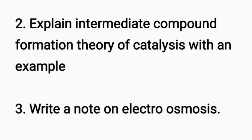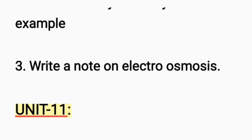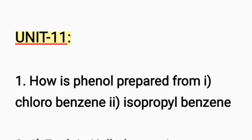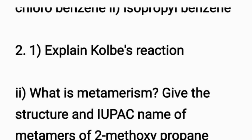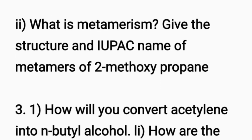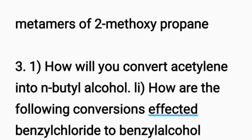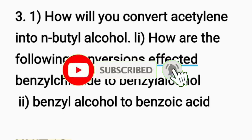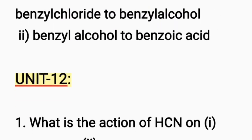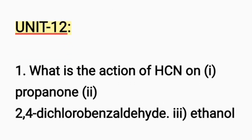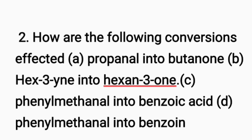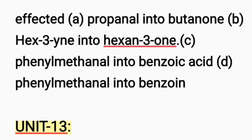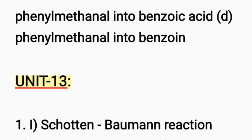Next, the second question: explain the intermediate compound formation theory of catalysis with an example. That's a 5-mark question; you have to give 3-mark examples, 2-mark examples, and 1-mark examples. Second question: explain the Clemmensen reaction — very very important. Third question: how will you convert acetylene into n-butyl? That is from Unit 11 and Unit 13.